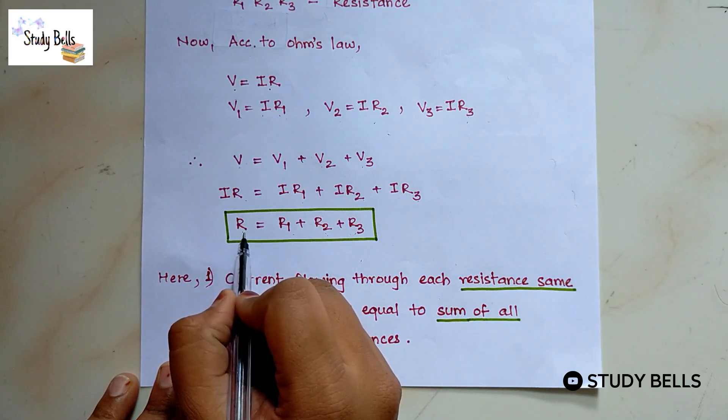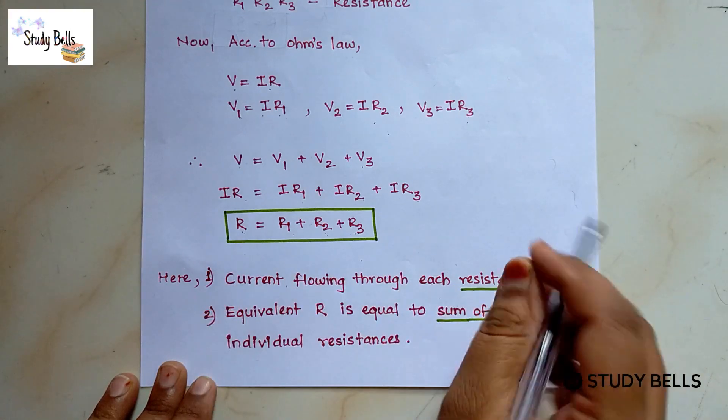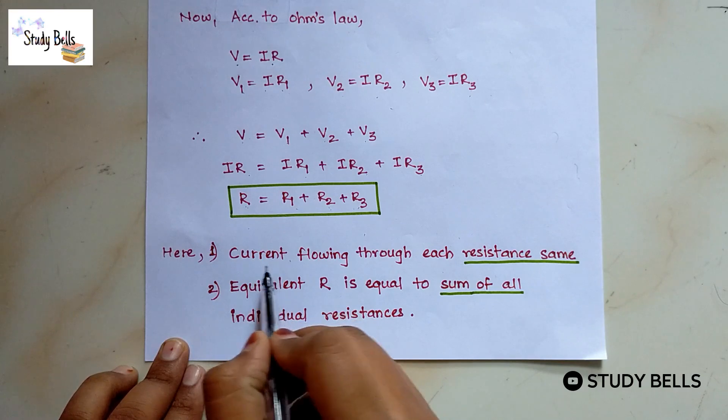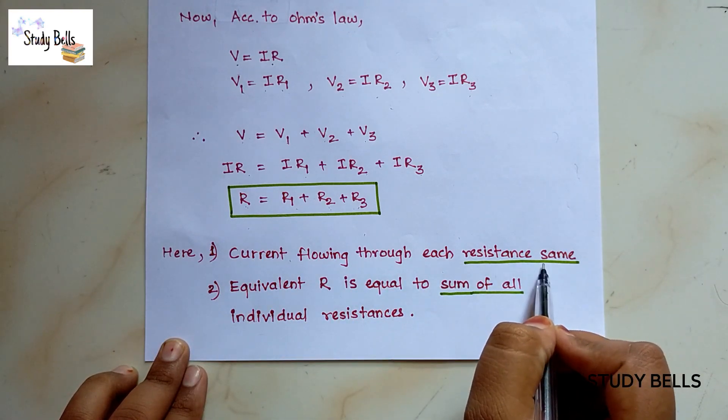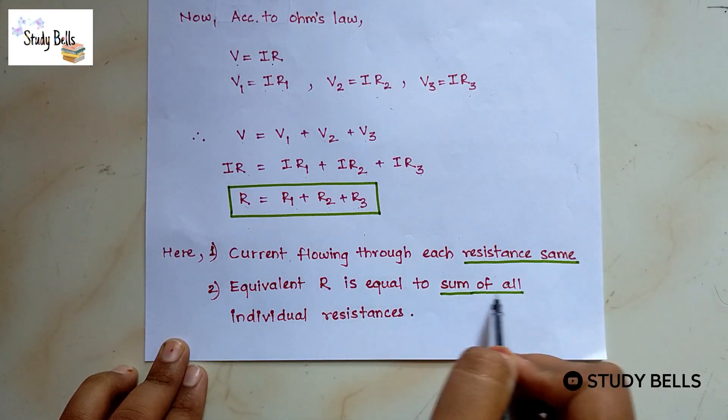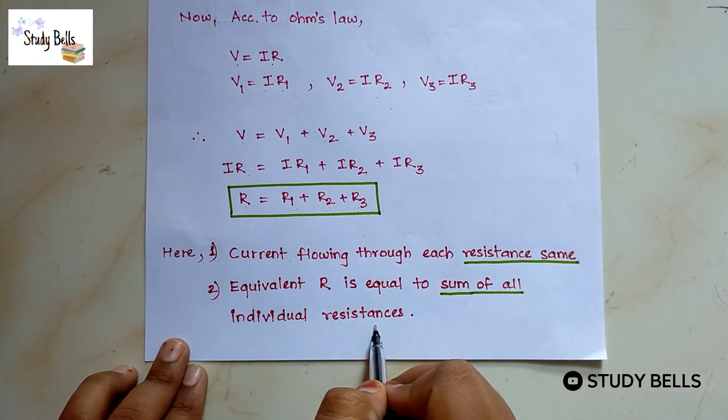Where R is equivalent resistance of this series circuit. Here we conclude that current flowing through each resistance is same and equivalent R is equal to sum of all individual resistances.